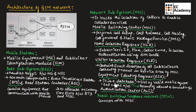The equipment identity register, EIR, is a database which contains a list of valid mobile equipments on the network. It keeps a record of allowed and banned users in the network. Next, the authentication center performs the authentication of subscribers in the network.